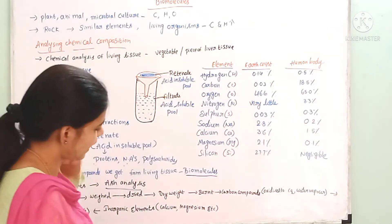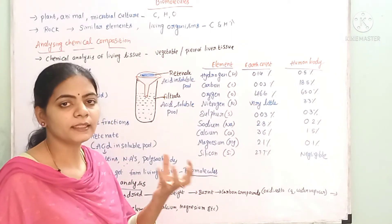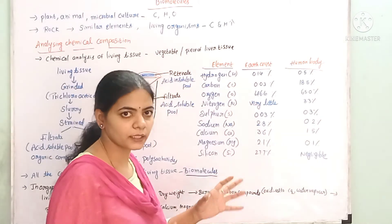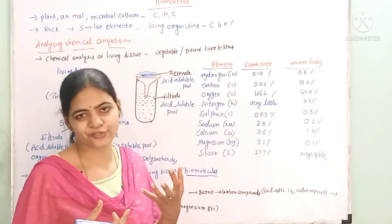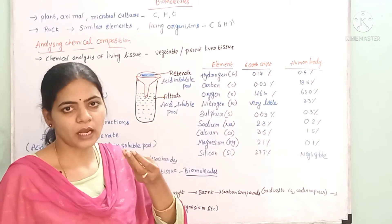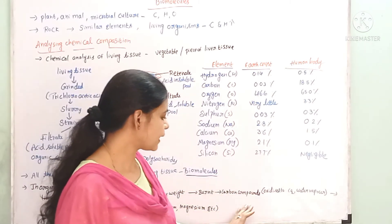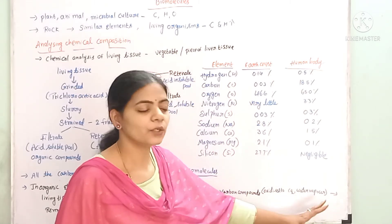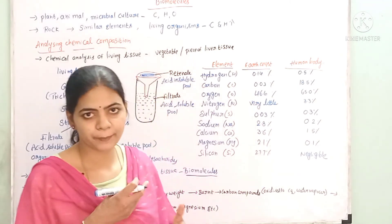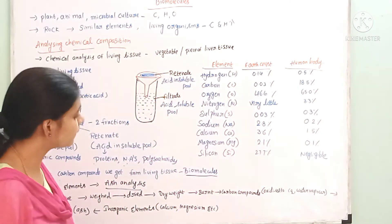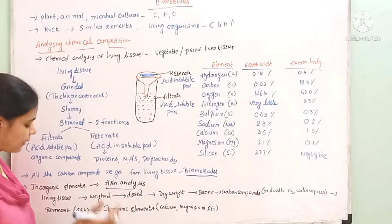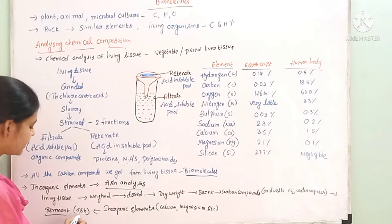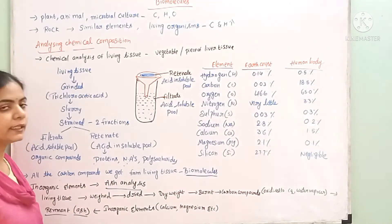You can then burn the dry material. When burning occurs, we get fumes released. The carbon compounds are oxidized to carbon dioxide and water vapor, which escape as fumes. What remains after burning is the ash. The ash contains inorganic elements.